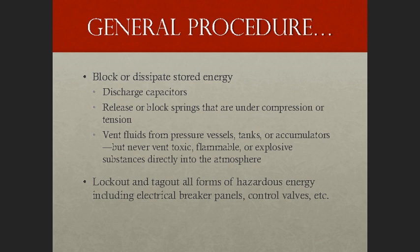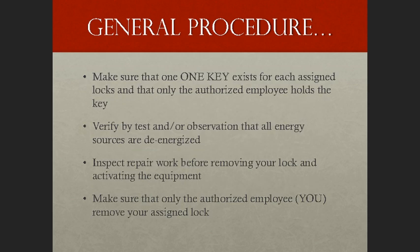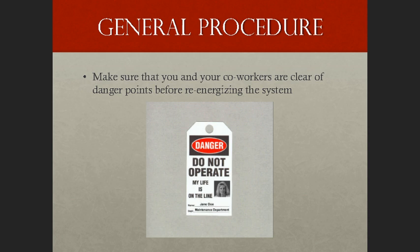The third step is to lockout and tagout all forms of hazardous energy, including electrical breaker panels, control valves, etc. Next, ensure that only one key exists for each assigned lock and that only the authorized employee holds that key. Then verify by test and/or observation that all energy sources have been de-energized. Inspect repair work before removing the lock and activating any equipment. Finally, only the authorized employee should remove their assigned lock, and ensure that all workers are clear of danger points before re-energizing the system.